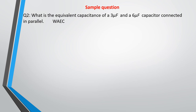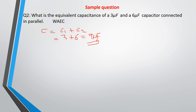Problem: what is the equivalent capacitance of a 3 microfarad and a 6 microfarad capacitor connected in parallel? Since they are in parallel, the overall capacitance equals C1 plus C2, which is 3 plus 6 equals 9 microfarad. This is a straightforward objective-type question.